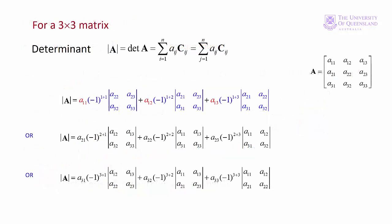The determinant is the sum of the products of the elements multiplied by their corresponding cofactors. We saw this formula when expanding along row 1, and similarly for row 2 and row 3. The general formula for expanding along any row or down any column is given, and in each case we get the same answer.